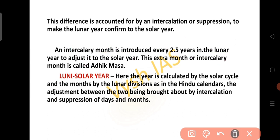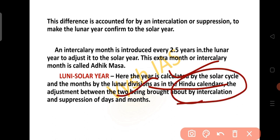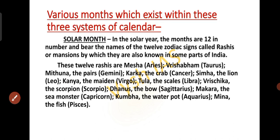In the lunisolar year, the year is calculated by the solar cycle and the month by the lunar division, as in the Hindu calendar. The adjustment between the two is brought about by the intercalation and suppression of days and months. Let's see about the various months which exist within the three calendars: solar system, lunar system and lunisolar system.